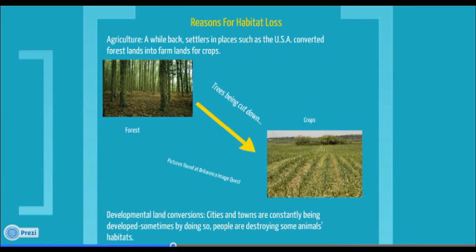Agriculture is one of the reasons for habitat loss. Settlers that came from England or France cut down trees and built farms there and grew crops there. Developmental land conversions, such as cities and towns that were built on where forests used to be, is an example of how developmental land conversions destroy the habitat.